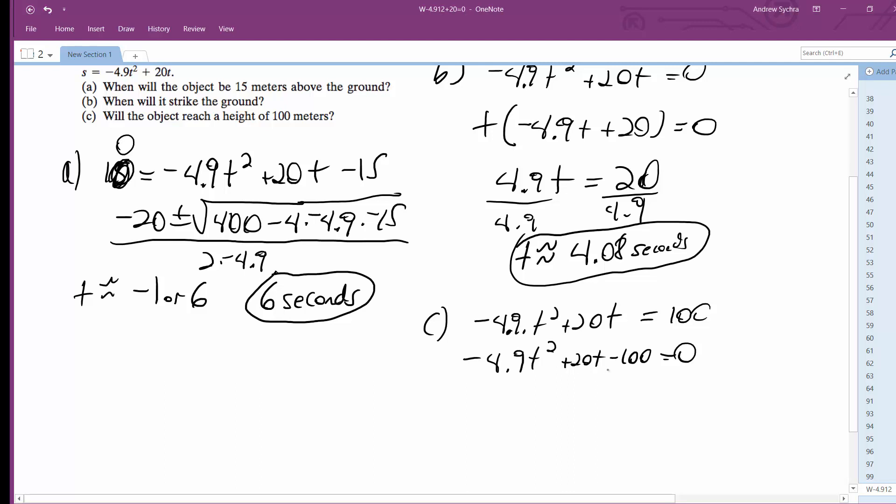It never reaches 100, but what you can do to determine this is use the discriminant. So you get B squared, 20 squared, minus 4 times A times C. It ends up being 400 minus this, which is larger than 400, so you get a negative result under the radical, which means there are no real solutions. So it can't happen. Never reaches 100.